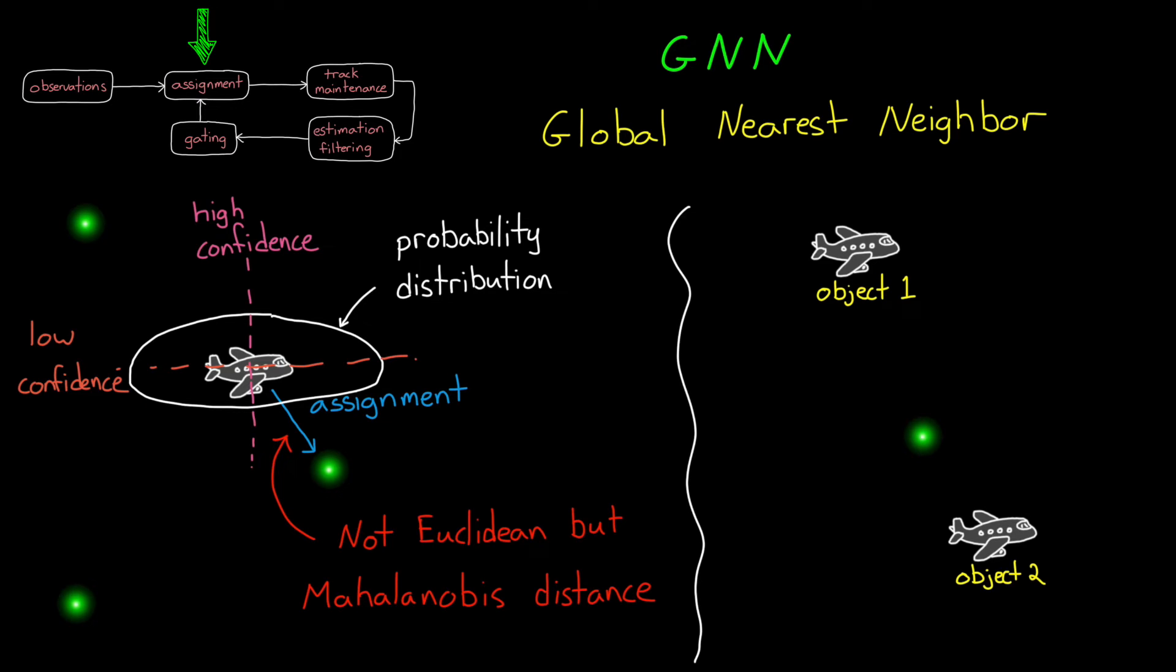For example, in this simple image, we have a prediction for the location of two different objects and a single detection that lies between them. If we used Euclidean distance, we'd assume that the detection is of object 2 since it's closer. But if we look at the probability distributions of the two predictions, then we can see that it's more probable that the detection is of object 1. And this is what the Mahalanobis distance does for us. It's the distance normalized by the standard deviation.